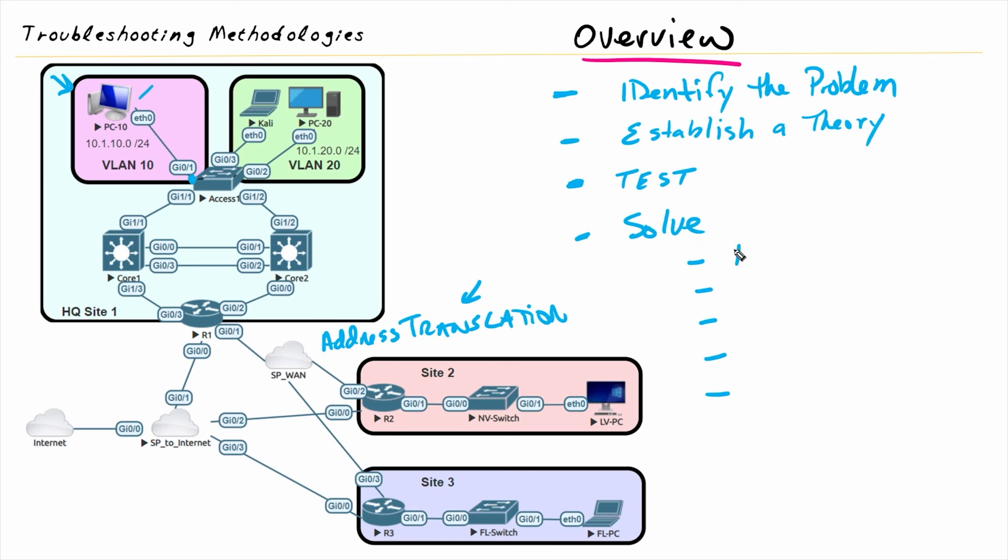So if we've done some testing and we've narrowed it down that it is an address translation issue regarding solving that, we want to create a game plan on exactly how we are going to solve that problem. Perhaps with network address translation, the NAT device was set up to support VLAN 20 with the 10.1.20 subnet and other networks like this over here at Site 2 and Site 3, but maybe perhaps not including the 10.1.10 subnet. So we'd want to make a plan to correct that.